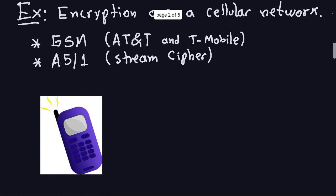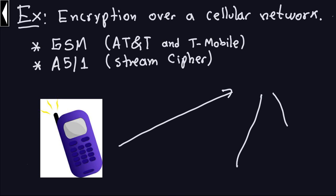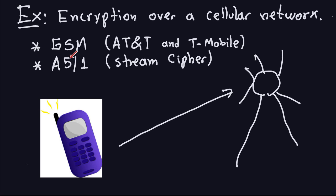Oversimplifying: when you talk on the phone, your voice is translated into zeros and ones — binary — and that data is transmitted to a tower, which takes your data and distributes it to the network, to the person you're calling or texting or sending pictures to. The GSM network uses an encryption algorithm to encrypt your voice. Of course, these things can be cracked as well.